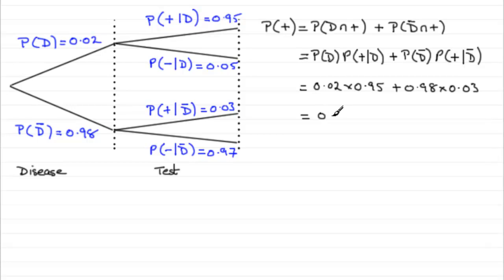If you work that out, what you should find you get is 0.0484, or you could write it as an exact fraction. Either way it's up to you, it turns out to be 121 over 2500.